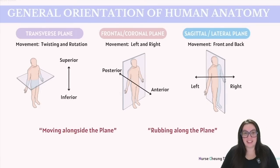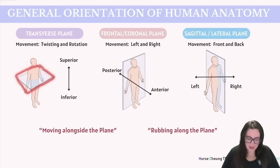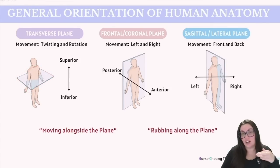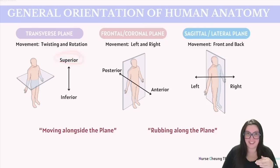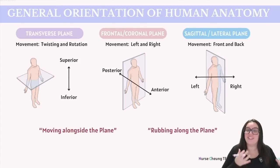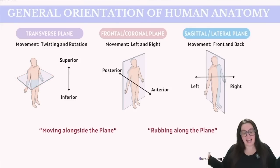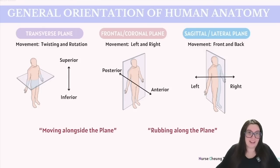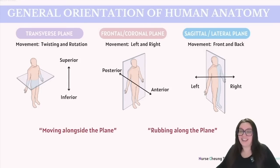Starting with our transverse plane: the transverse plane is a horizontal plane. What it's going to do is divide our body into our upper, which is our superior parts, and our lower, which is our inferior parts. When we talk about movements in the transverse plane, we're talking about rotational or twisting movements only on the body's vertical axis. As you can see in this picture, it looks like your arms and half of your body are stuck in this wall, so the only thing you can do is twist and turn — you can't move your arms or bend forward or backward.